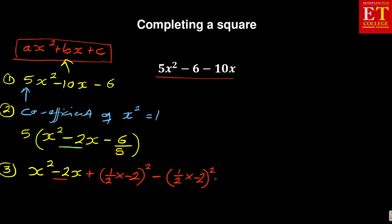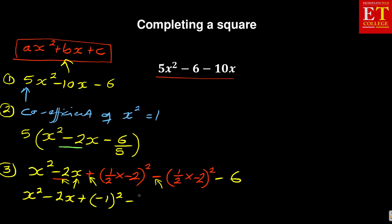We looked at the coefficient of x, which is negative 2. We find half of negative 2 — half times minus 2 is the same as dividing negative 2 by 2. Because there is no equal sign and we added something, we must also take it out. So you have x squared minus 2x plus minus 1 squared, minus minus 1 squared, minus 6. That is the concept of completing a square in this case.